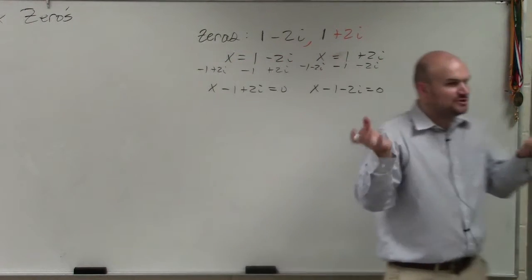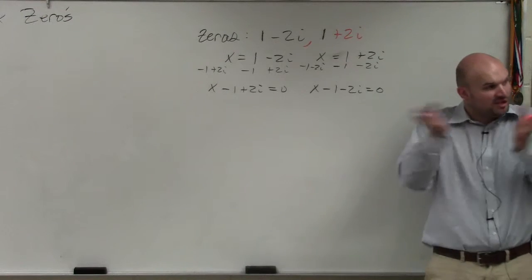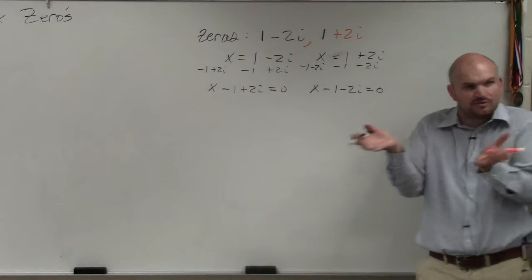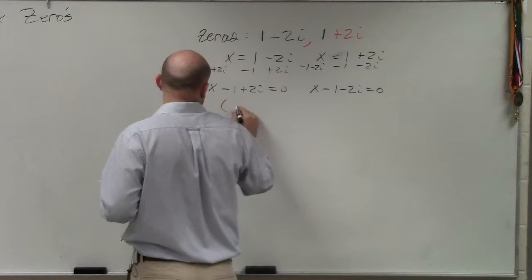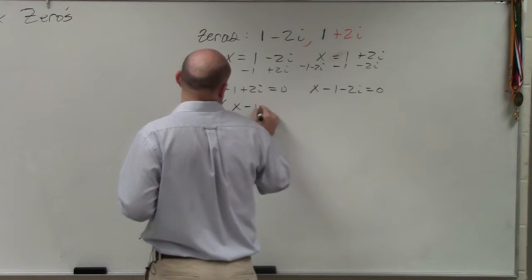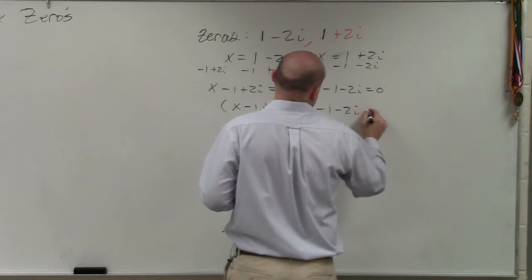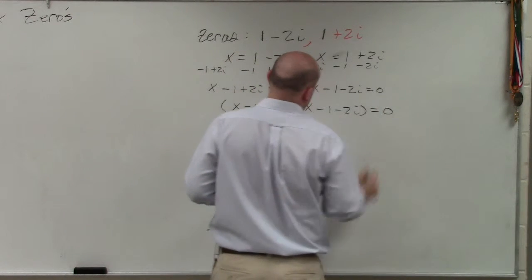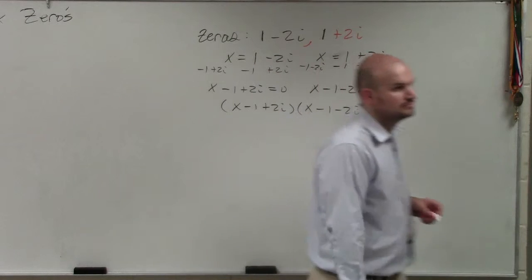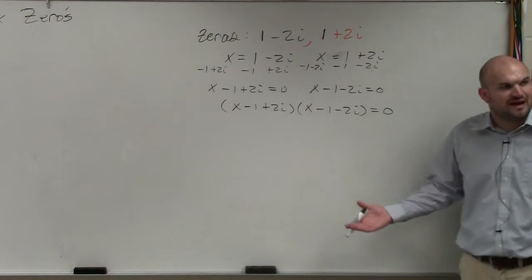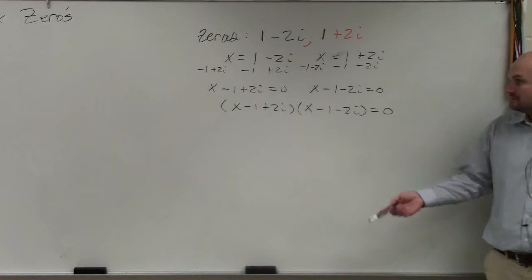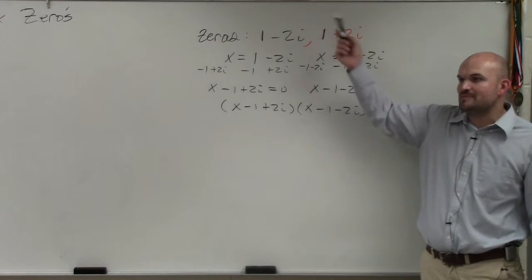It's like the reverse zero product property. So now you're kind of working backwards. It's just factoring to find the zeros backwards. I'm just doing all this backwards.